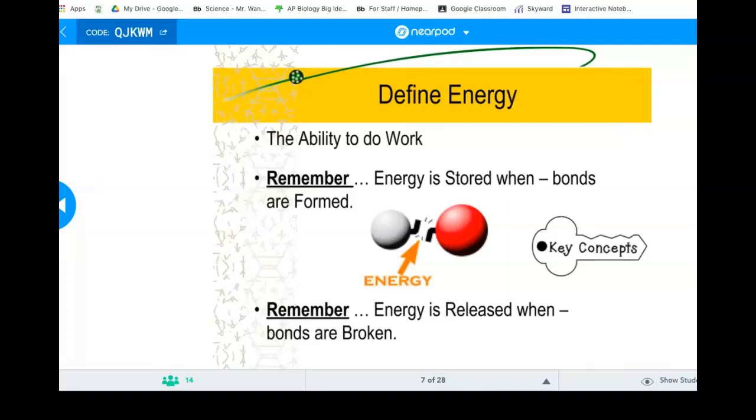By definition, energy is the ability to do work. Okay, here's a key concept. We've mentioned this a couple of times. So I would expect to see this on your test. I may even expect to see this on your final exam. Energy is stored in chemical bonds, right? Chemical bonds are sharing of electrons. The electrons are the energy source. So if you have a bond, energy is stored up, its potential, ready to be used later. Once you break that bond, energy is released. So energy is stored when bonds are formed. Energy is released when bonds are broken. Key concept.